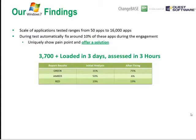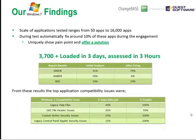Here's a great example. We looked at 3,700 applications. We loaded those 3,700 applications in three days, then took three hours to assess them. We automatically tested those applications and got some very quick results. This is the type of work that would take over a year to do manually, and we're doing this in days.